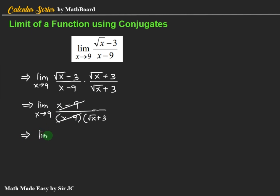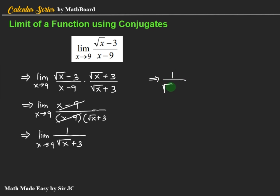We now have the limit of 1 / (√x + 3) as x approaches 9. From here, we can now do substitution. That is 1 / (√9 + 3) = 1 / (3 + 3). The final answer is 1/6.